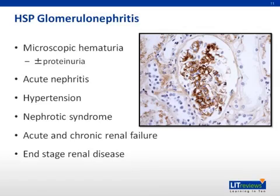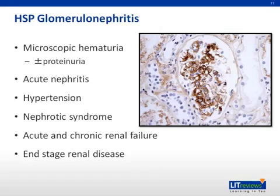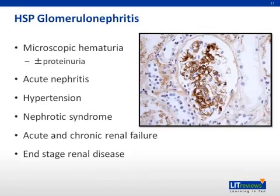Renal histopathology typically shows mesangial proliferation with hypercellularity. There may be a focal segmental process or extensive crescentic involvement, indicating more significant inflammatory damage. Like in other tissues, immunostaining for IgA deposition is positive, as in this photomicrograph.